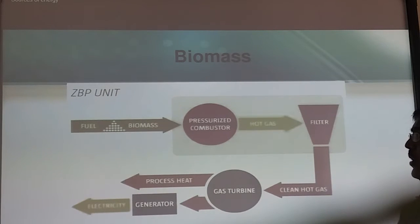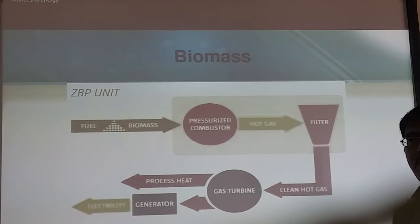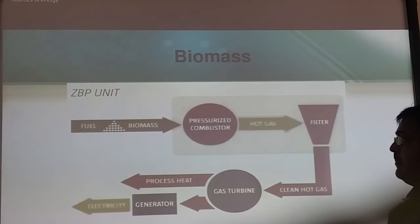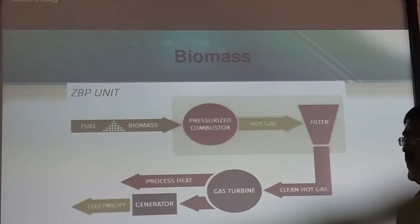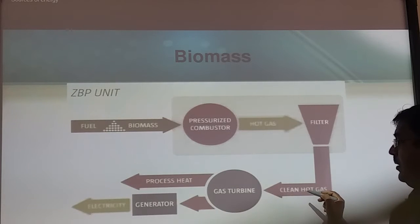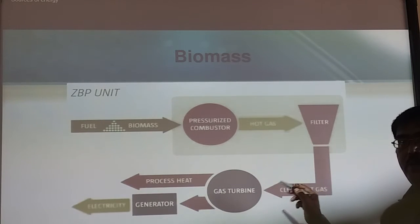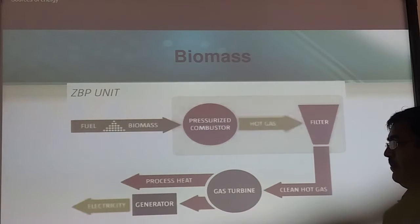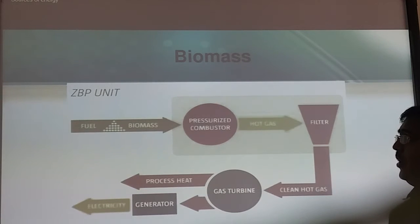For biomass fuel, pressurized combustion is used. The biomass is fueled in a limited area — that is called pressurized combustion. After that, hot gas is produced, which is then cleaned. When the clean hot gas starts moving, the gas turbine generates electricity. This is how biomass energy is converted into electrical energy.